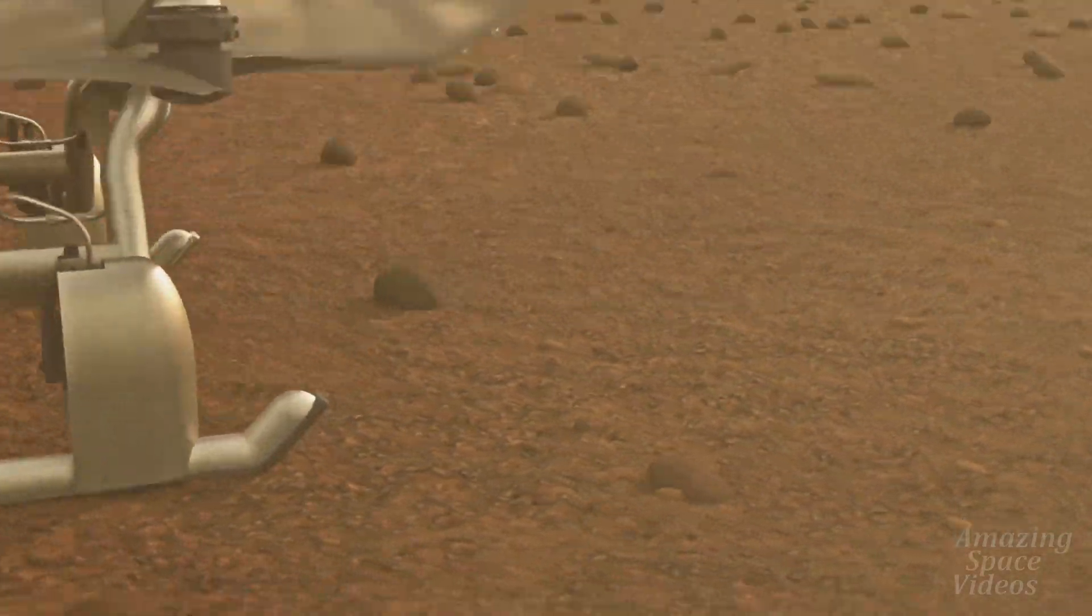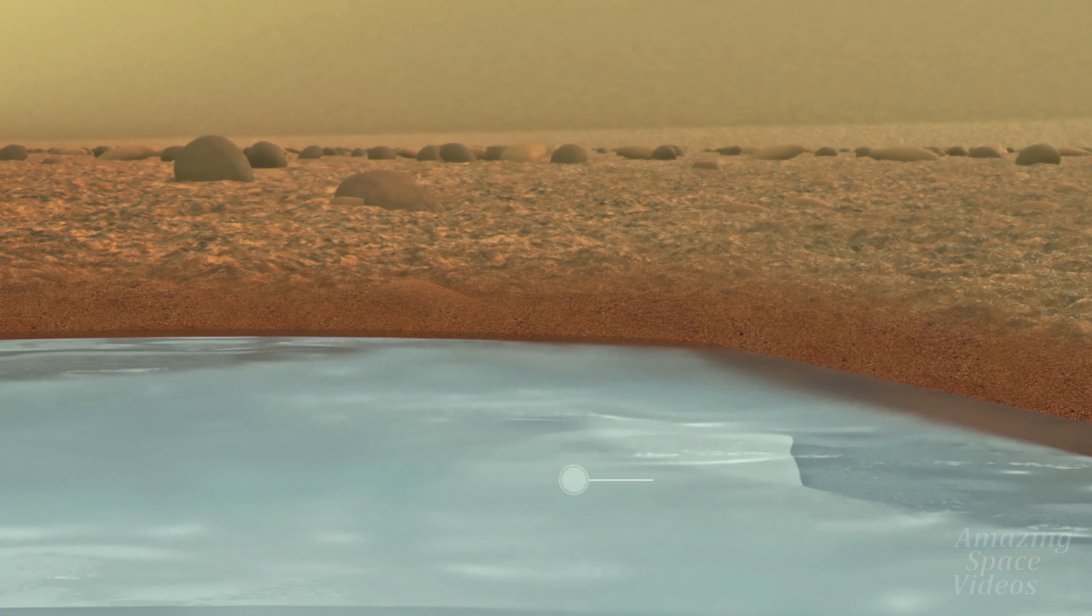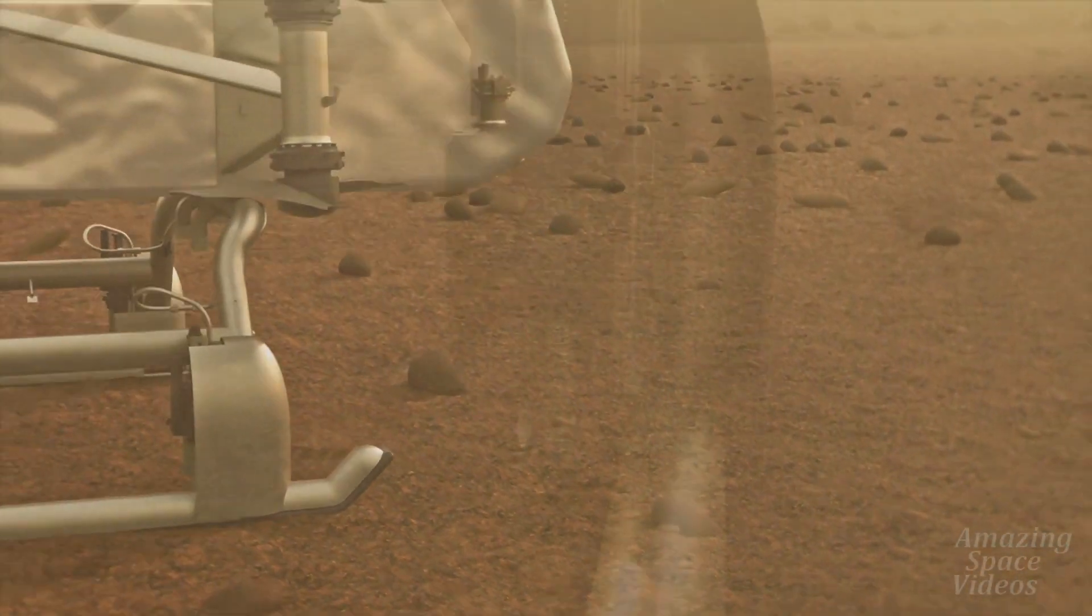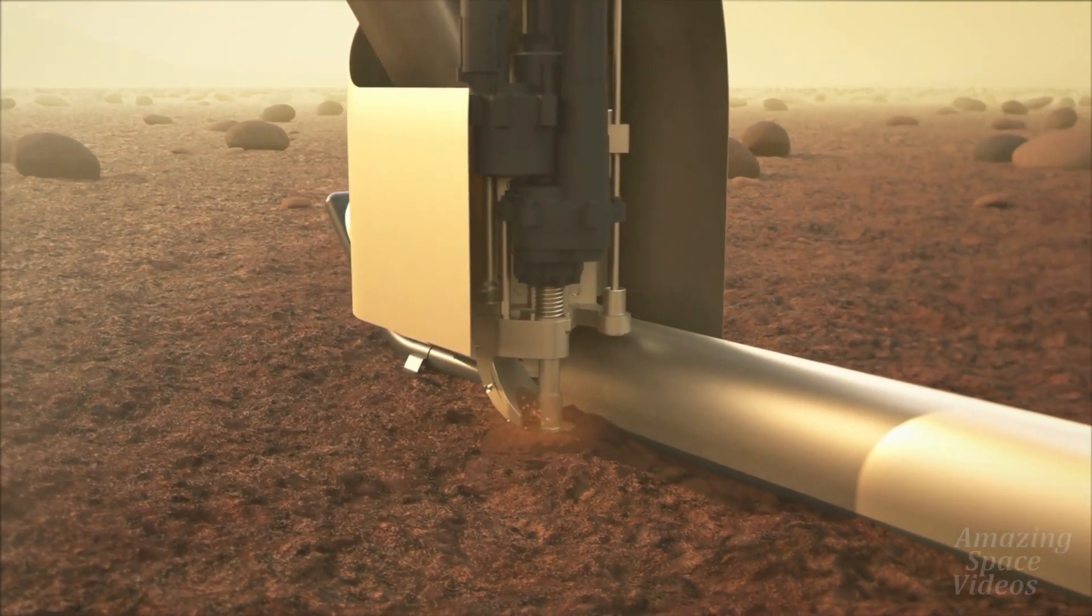Dragonfly determines if there are well-defined layers of these materials just below the lander. For a closer inspection, Dragonfly uses its drill to generate tailings from Titan's hard, frozen surface.